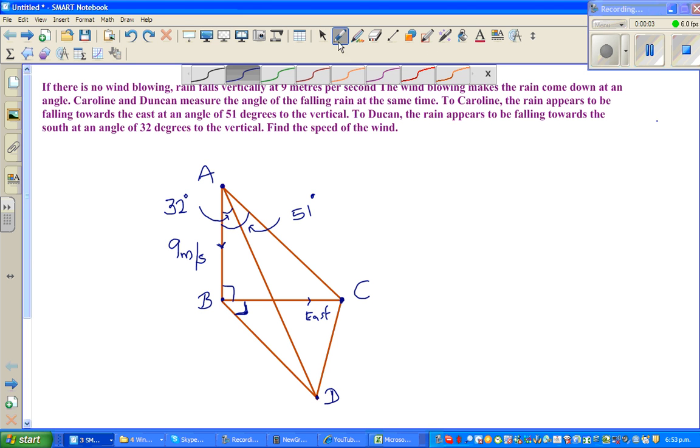Hello, in this video I'm going to do one example on the topic of trigonometry. Let's read the question. The question is a practical application where we can use trigonometry to find speed. If there is no wind blowing, rain falls vertically at 9 meters per second.